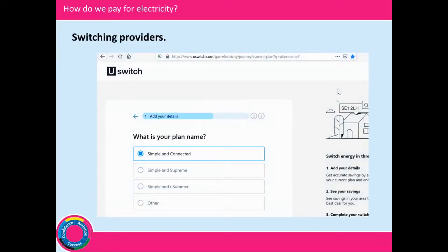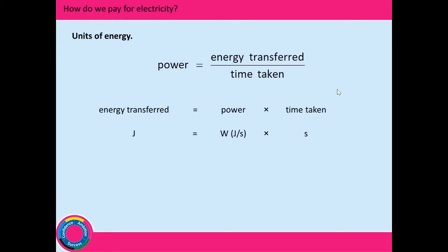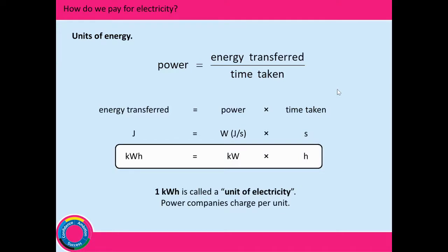Here's a website you can use — uSwitch.com — but there are others as well for switching providers. Now, how do we pay for electricity? We have to understand the units used. Going back to our equation, power equals energy transferred over time, rearranging to: energy transferred equals power times time. Energy companies don't operate in joules because a joule is a very small unit. They work in kilowatts and hours, so the unit is the kilowatt-hour. One kilowatt-hour is called a unit of electricity, and power companies charge per unit.